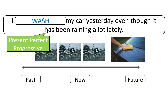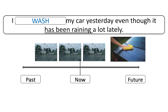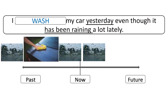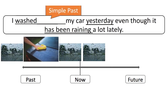In this sentence, we still have present perfect progressive in one clause, but notice what is different in the first clause. Our timeline looks like this, which means that we need to change the verb to: 'I washed my car yesterday.'